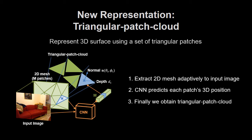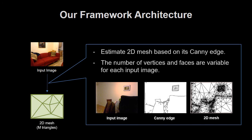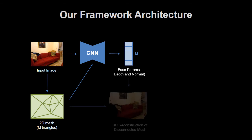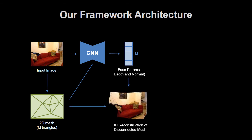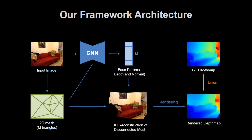It's an effective representation for complex 3D shapes. To estimate this, we create a CNN framework. First, we estimate a 2D mesh from the input image, based on the input image's Canny edge. The number of vertices and faces of the 2D mesh is variable for each input image. Next, we estimate each face's 3D position by CNN, and obtain a 3D Triangular Patch Cloud from the regressed parameters. Finally, we calculate the loss based on the difference between the depth map rendered from the estimated 3D mesh and its ground truth depth map, and train the CNN by back-propagating the loss.